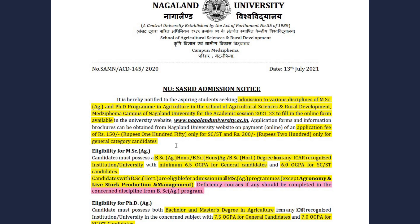What are the eligibility criteria for MSc Agriculture? Students wanting admission in MSc Agriculture need to have the relevant courses in their degree from an ICAR Recognized Institution, with a minimum of 6.5 OGPA for general categories and 6.0 OGPA for SC and ST categories. Candidates with BSc Agriculture are eligible for admissions in all MSc Agriculture programs except Agronomy and Livestock Production and Management.